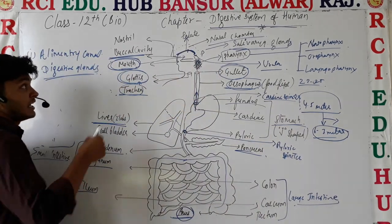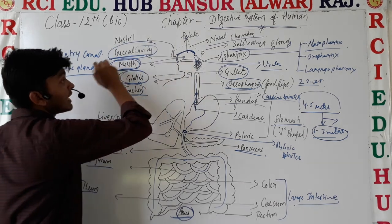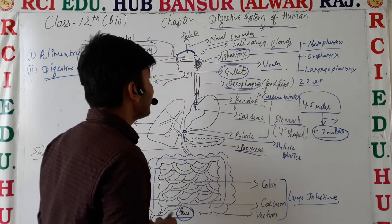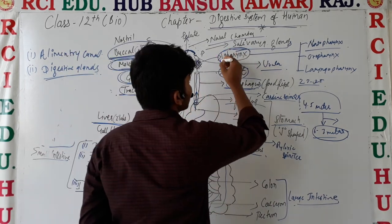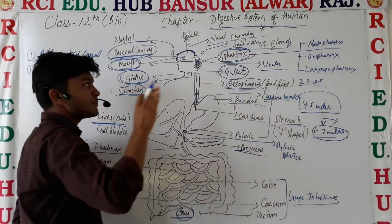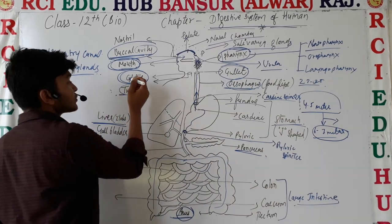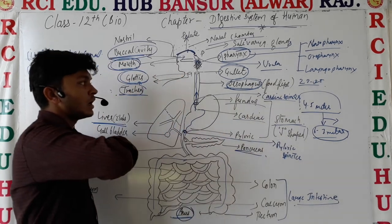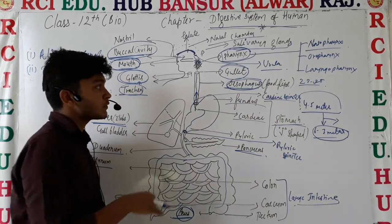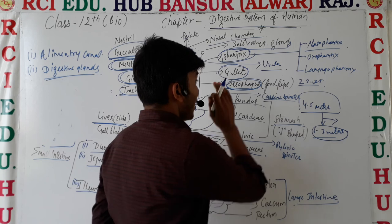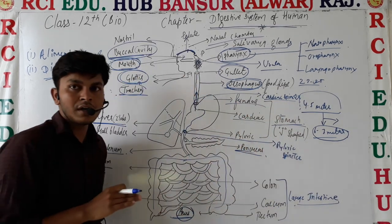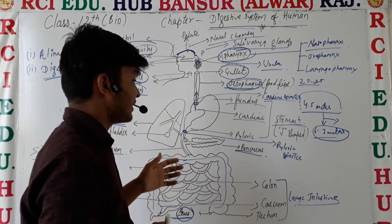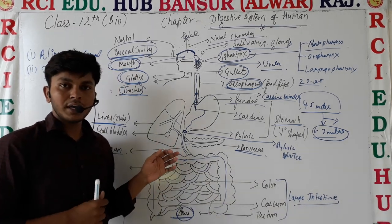Now we are going to study each organ one by one — what is the buccal cavity, what is the pharynx and its types and functions, the structure and function of the esophagus, how the esophagus connects to the stomach, and all further details. I hope you are understanding what I am trying to say. Thank you.